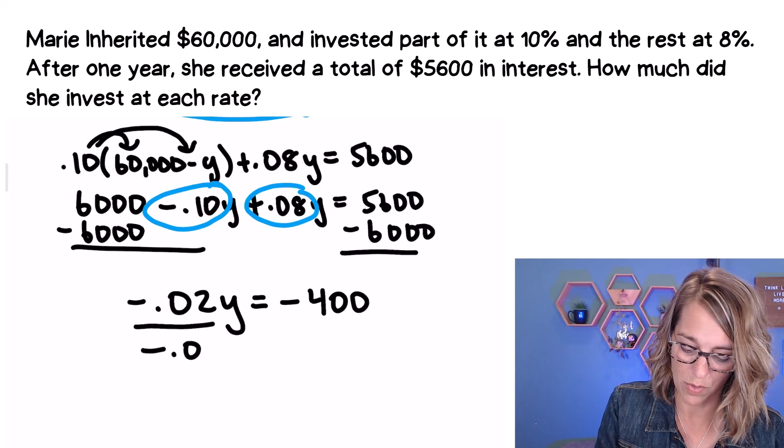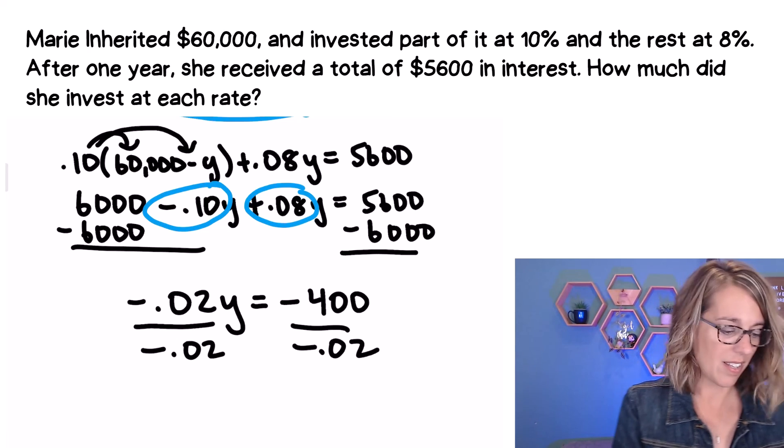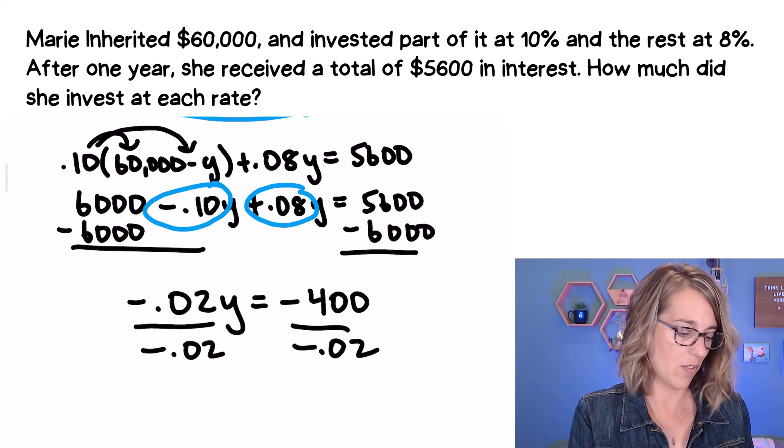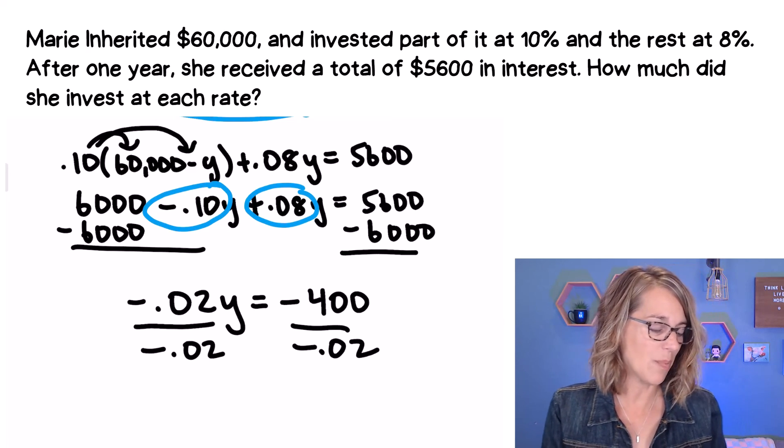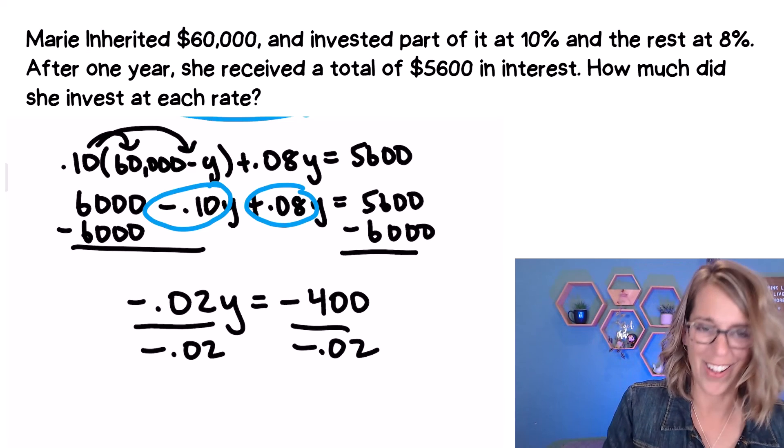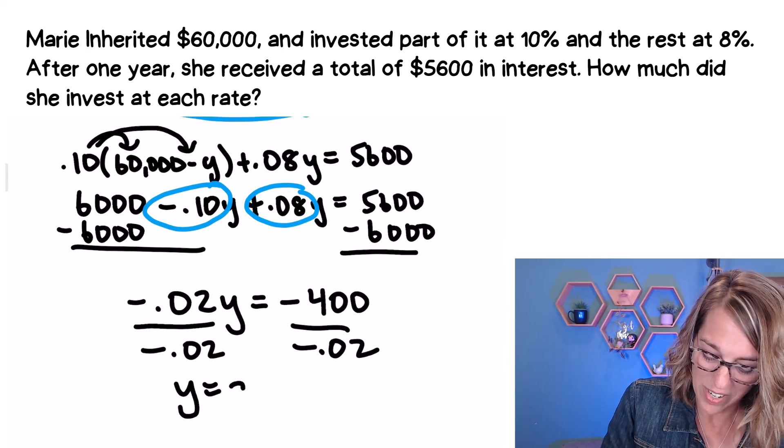Divide both sides by negative 0.02. And I'm not going to do that in my head. So I'm going to go ahead and take negative 400 divided by negative 0.02 and I end up with $20,000. That sounds like a good answer, isn't it? So Y is equal to $20,000.